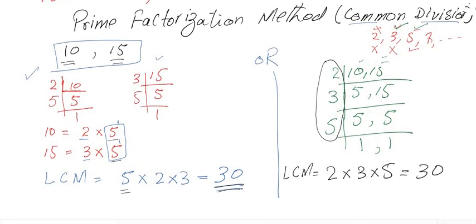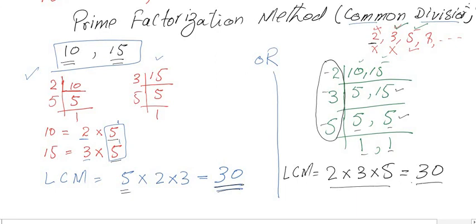The third method is the common divisor method, where we place all numbers in one row and divide by the minimum prime number. Every number should be divided by that prime number; if not, leave it as it is. For example, 10 divided by 2 is 5, and 15 cannot be divided by 2 so we write 15 as is. Continue until all values become 1, then multiply all divisors to get the LCM.